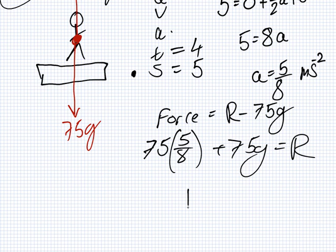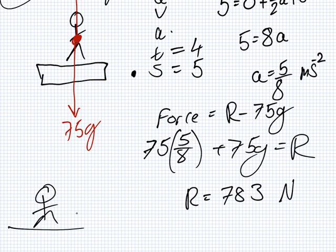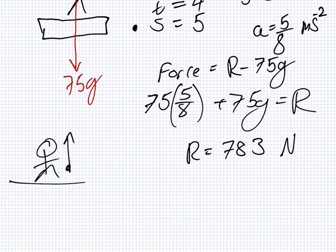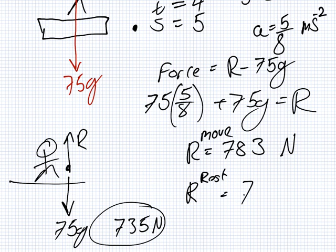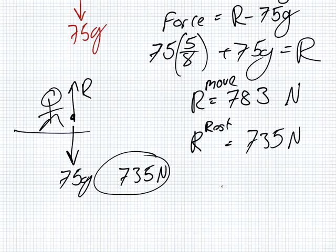So, what did you get for R? 783 newtons. Now, if the man was not moving, what should the R equal if it's not moving? So, it should equal 75 G, shouldn't it? Which is 735 newtons. So, this is the R when it's moving. And this is the R when it's not moving, which is at rest.